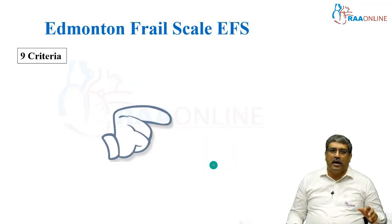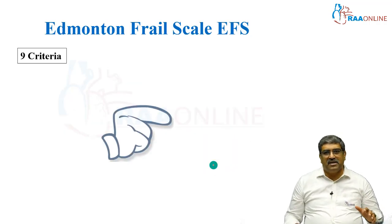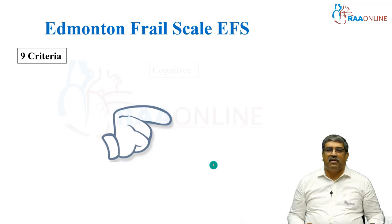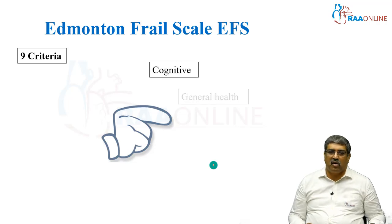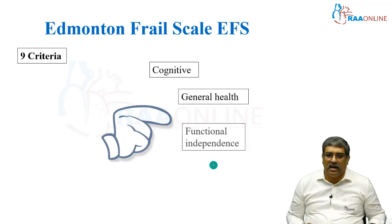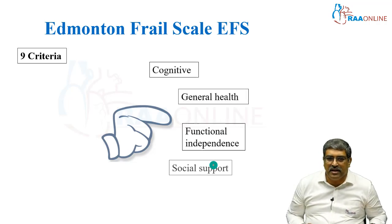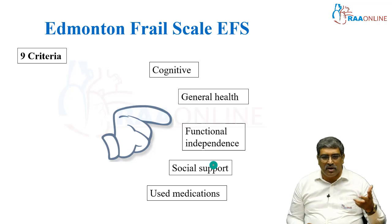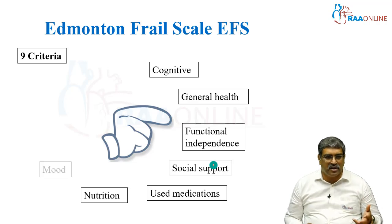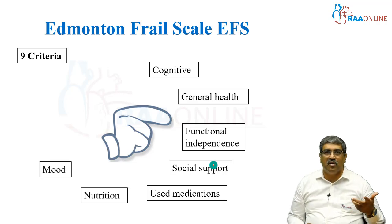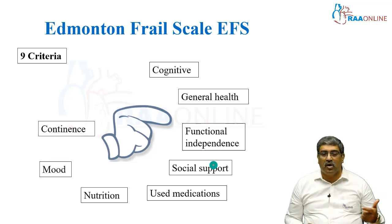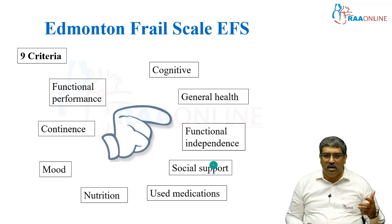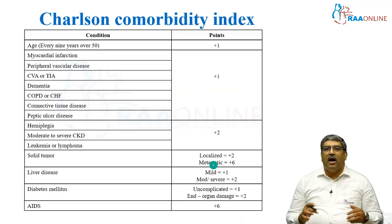Coming to the Edmonton Frail Scale, here they have nine criteria: cognitive status, general health, functional independence, social support, use of medication, nutrition, mood disorder of the patient, continence, and functional performance.